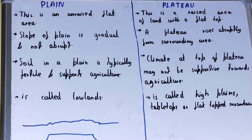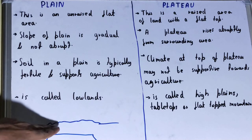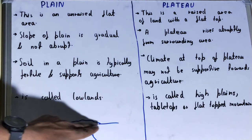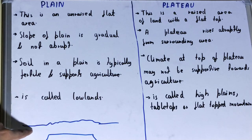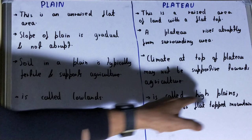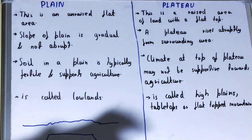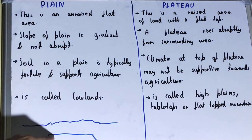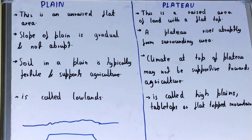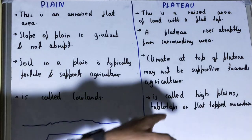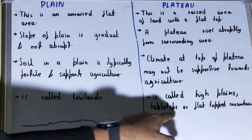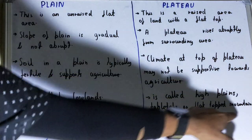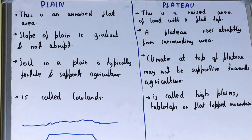Next, if you talk about the plane, it is also called lowlands because it exists in parallel with the ground level. But if you talk about the plateau, it is also called high plains — because it is a plain area that is raised from the surrounding — or you can call it table tops or flat-topped mountains.